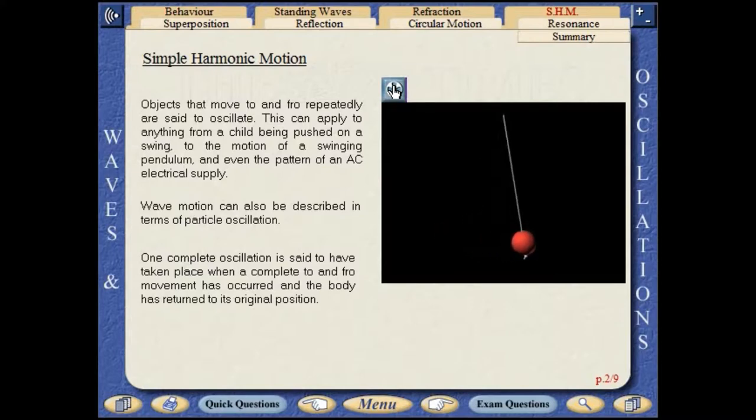Wave motion can also be described in terms of particle oscillation. One complete oscillation is said to have taken place when a complete to and fro movement has occurred and the body has returned to its original position.